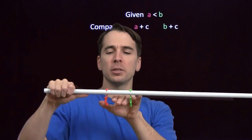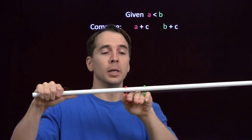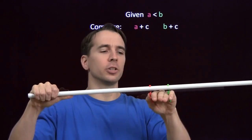Now, when I add c to both, that means I'm going to shift them to the right on the number line by the same amount. Because I'm adding c, I'm adding the same thing to both of them. Now, no matter how far I shift them to the right, the red monkey is still going to be to the left of the green monkey.